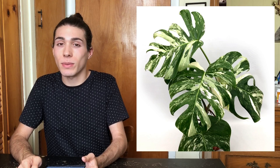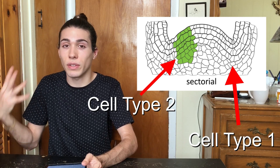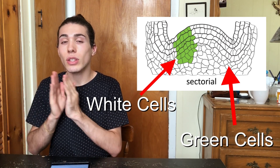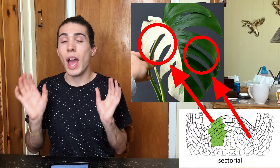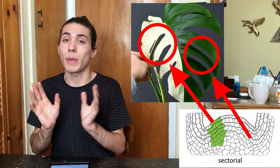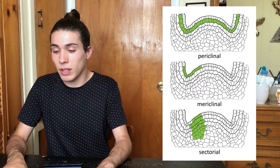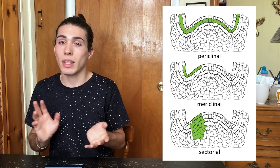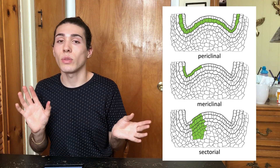First we're going to talk about chimeric variegation and explain what a chimera is — that's the type of variegation that exists within the Monstera Albo Borsigiana. A chimera is formed when two different types of cells with different genotypes or genetic makeups exist within a meristem of a plant. Essentially within the growth point there are white cells and green cells growing in conjunction to make a leaf. There are three different types of chimeric variegation, giving you different-looking variegation depending on which one it is.